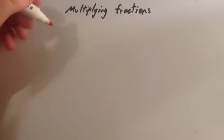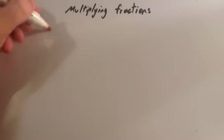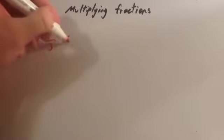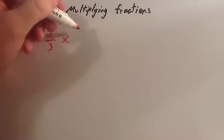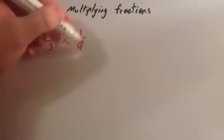In this video we're going to look at multiplying fractions. So let's have a look at two fractions — we're going to multiply them together. Let's do two thirds multiplied by one quarter.